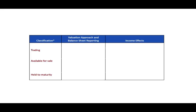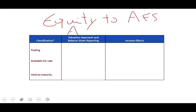The first thing I'm going to talk about is those three investment categories. I'm going to be discussing only three categories: trading, available for sale, and held to maturity. I am not going to discuss equity-to-available-for-sale or equity-to-consolidation, because those are advanced accounting topics covered in my advanced accounting course.